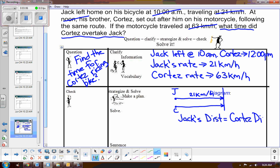So we can see in our diagram that Jack's distance is equal to Cortez's distance. That is the important aspect right there, because we know how to find distance. Distance is rate times time, and so we'll find Jack's distance, set it equal to Cortez distance, and solve for what we need to solve for.